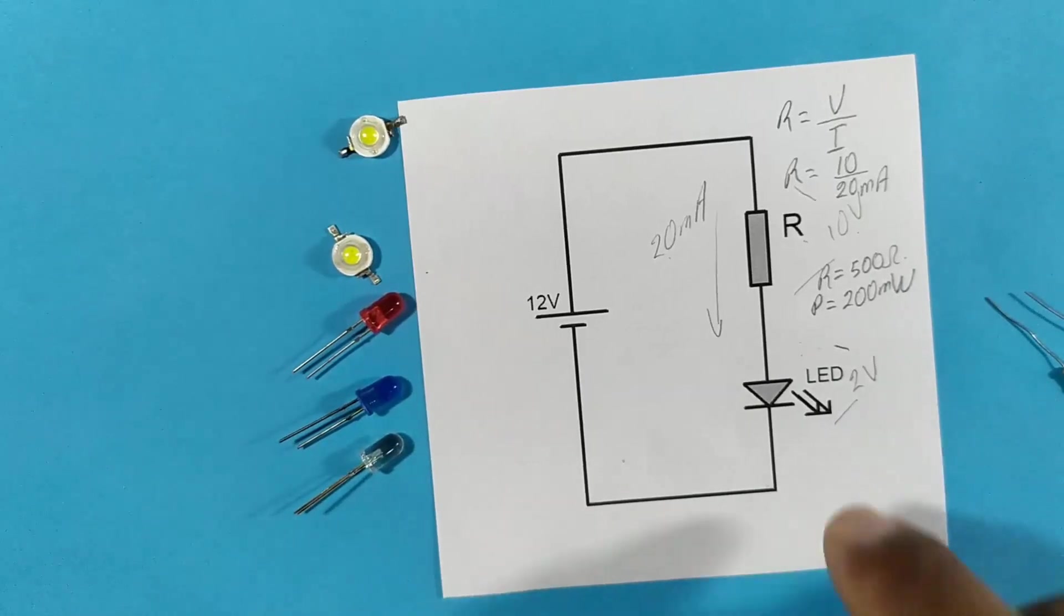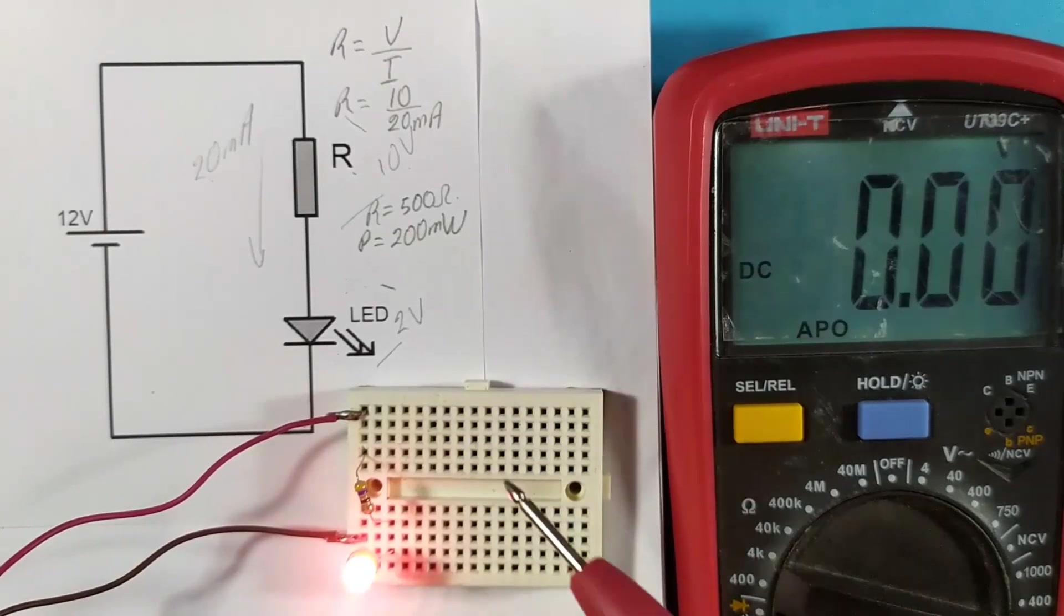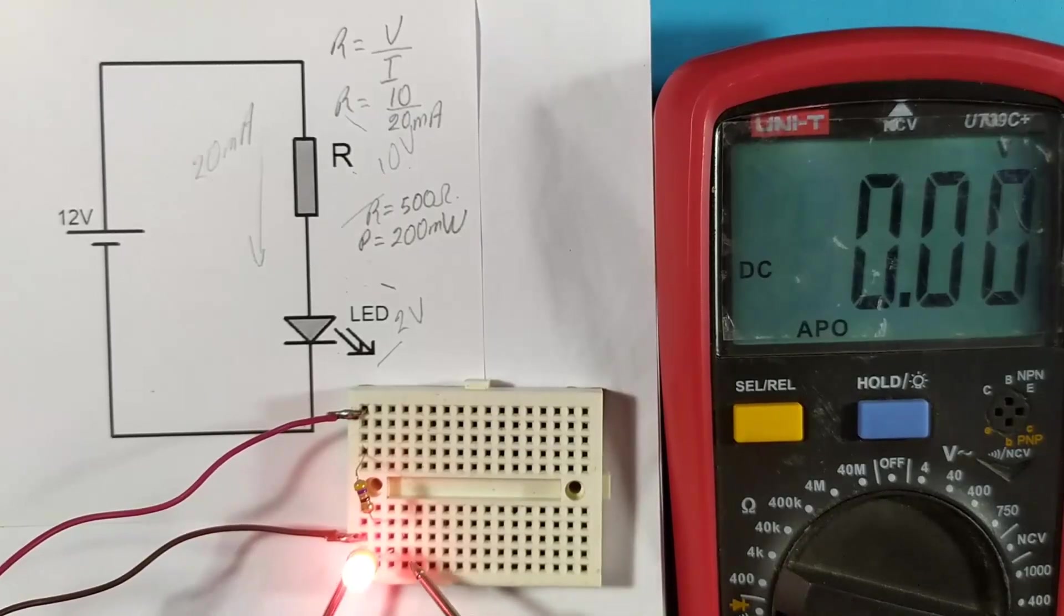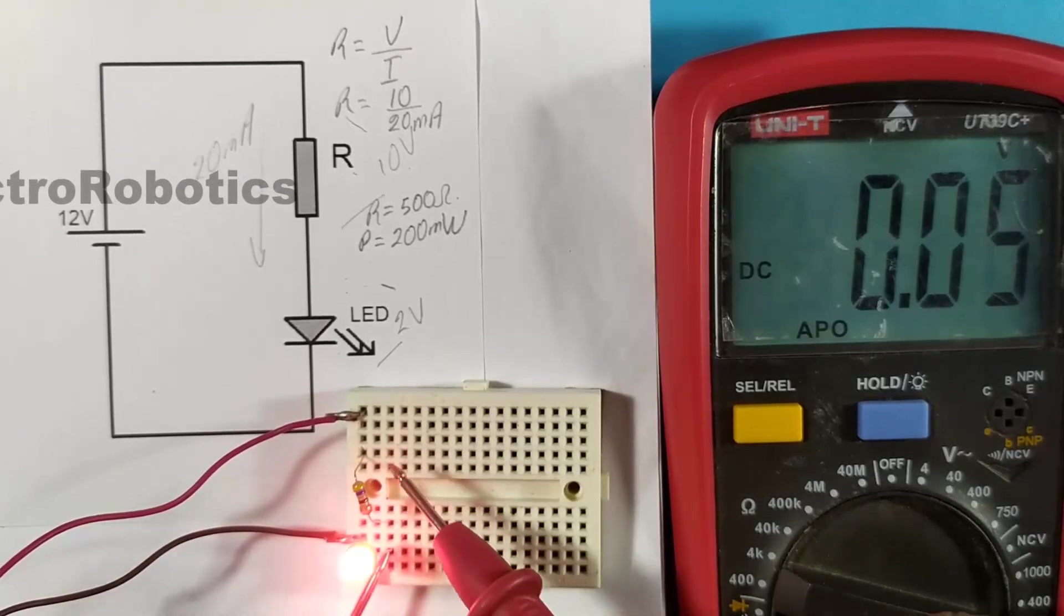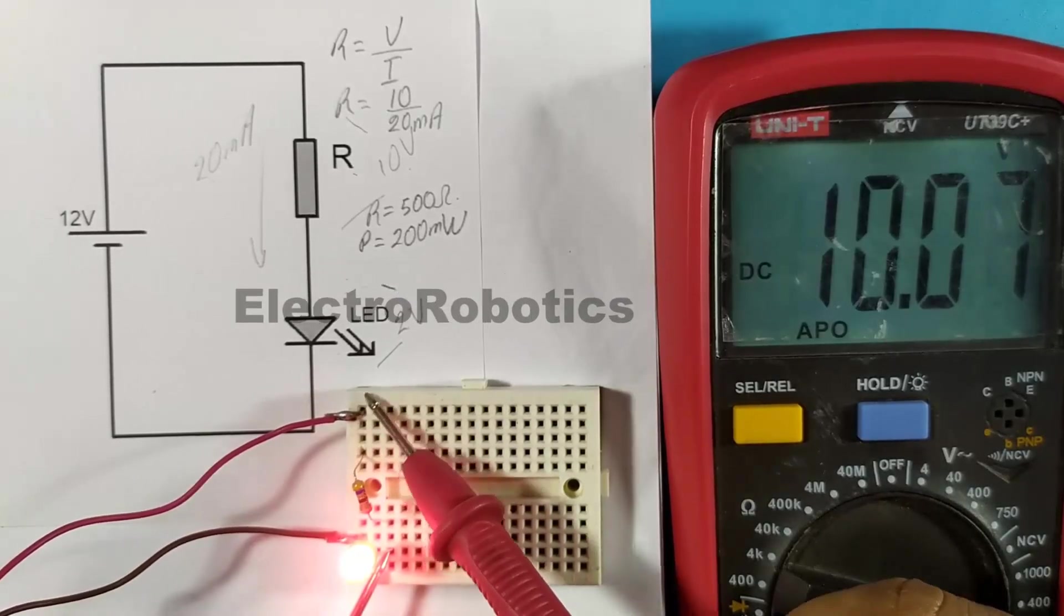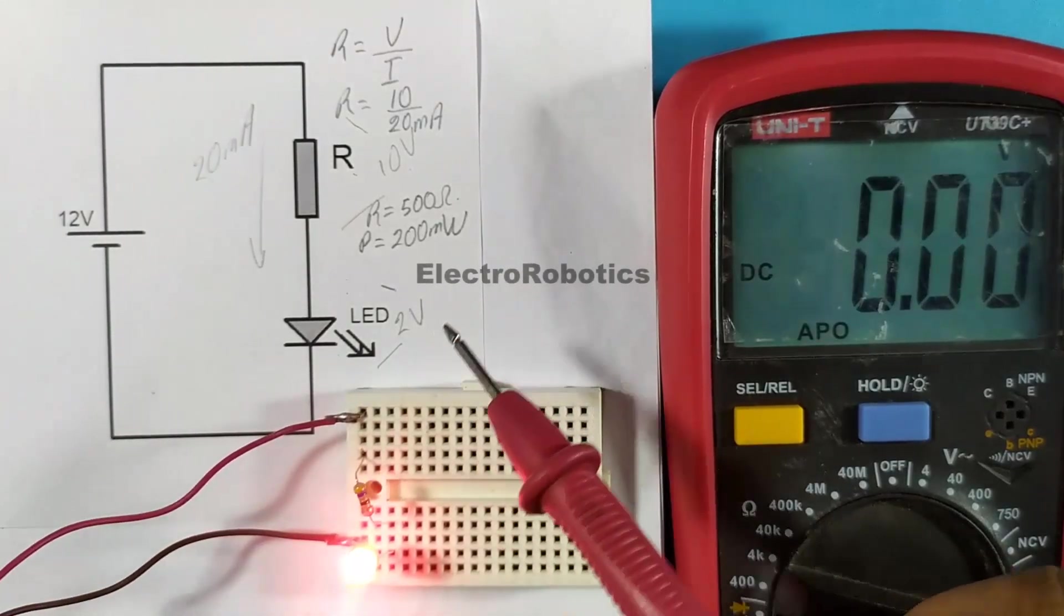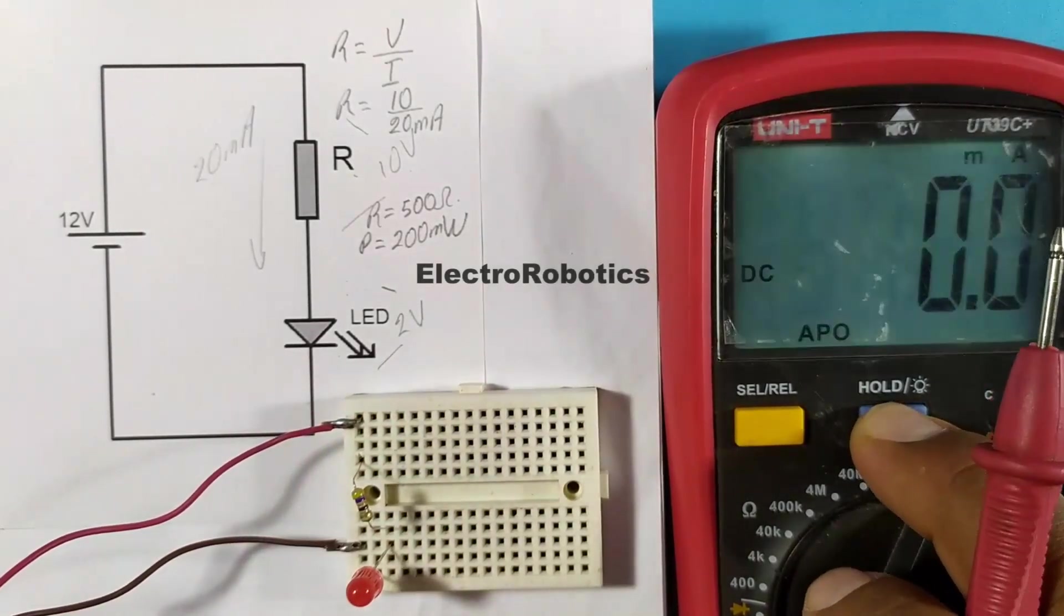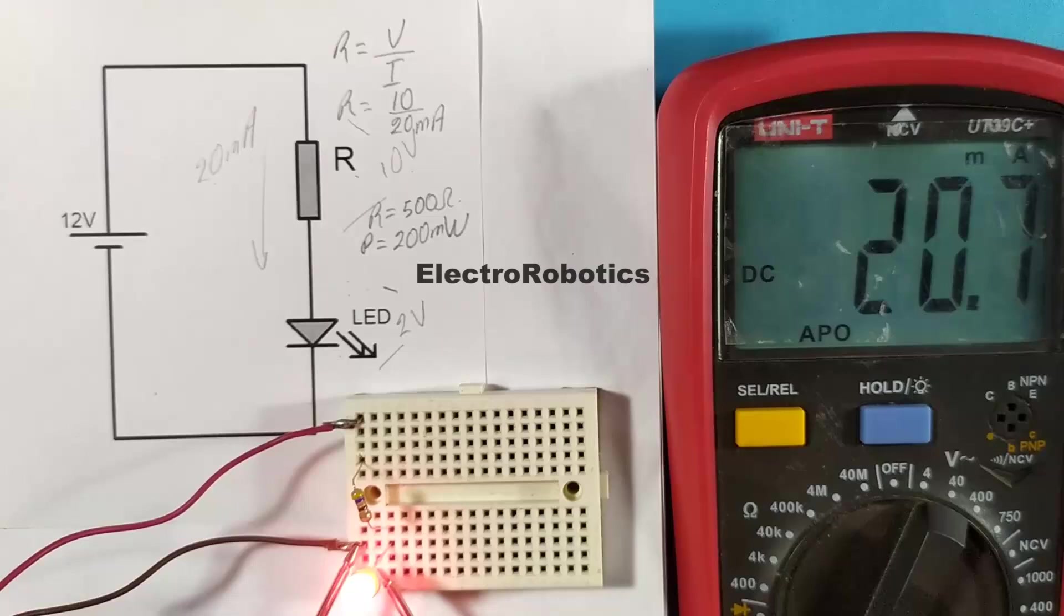But let's try it and see. Now let's measure the voltage in each component to confirm the data. We have a drop of 2.12 volts in the LED and a value of 10 volts in the resistor, which is the same as calculated. And the current in this case would be slightly higher. So let's measure the current. The current would then be 20.7 milliamps as calculated.